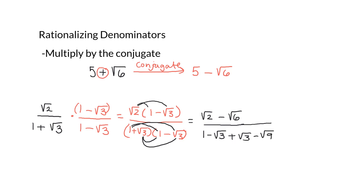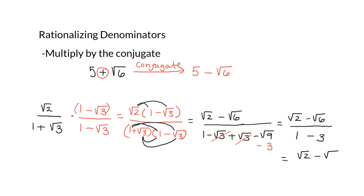In the denominator, the negative root 3 and positive root 3 cancel. Negative root 9 simplifies to negative 3, since the square root of 9 is 3. So in the denominator we have 1 minus 3, which gives us negative 2. The final expression is root 2 minus root 6 divided by negative 2.